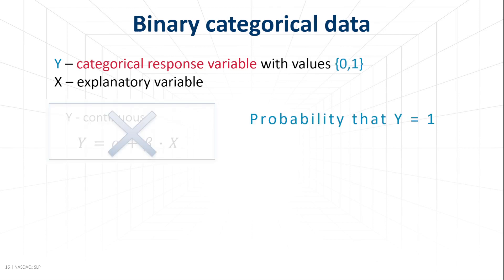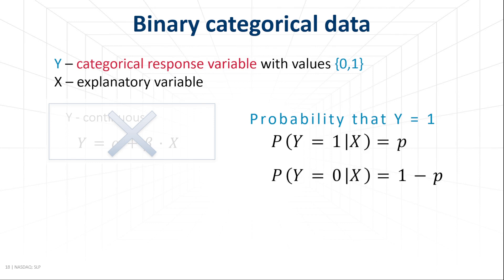So for categorical responses, instead of modeling y directly, we model the probability that y takes a certain value — for example, 1 — knowing that the explanatory variable has a value x. We can write it as p(y=1|x). Having only two possible answers, the probability to have the second answer is 1 minus p.